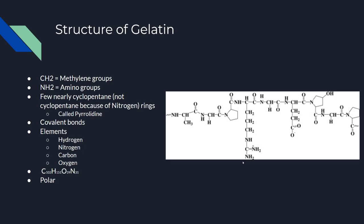These NH₂ groups are amino groups. And there are a few pentagonal shapes which look almost like cyclopentane; however, this is very important — they are not cyclopentane because of these nitrogens. These are not cyclopentane rings.